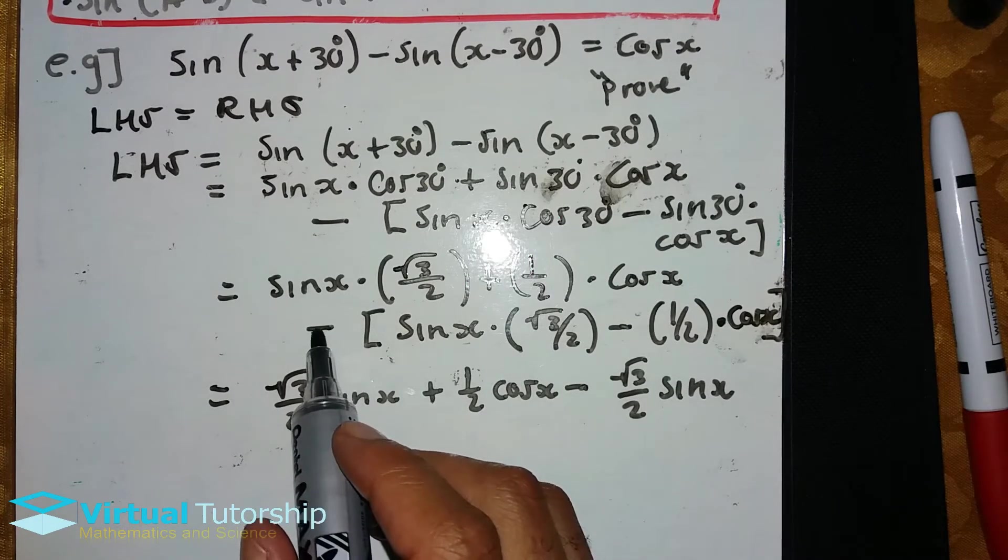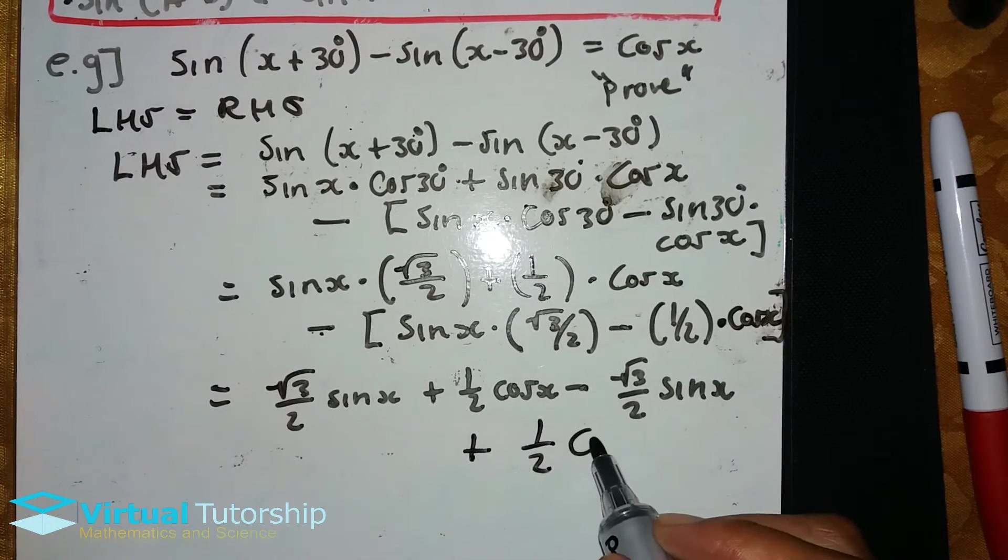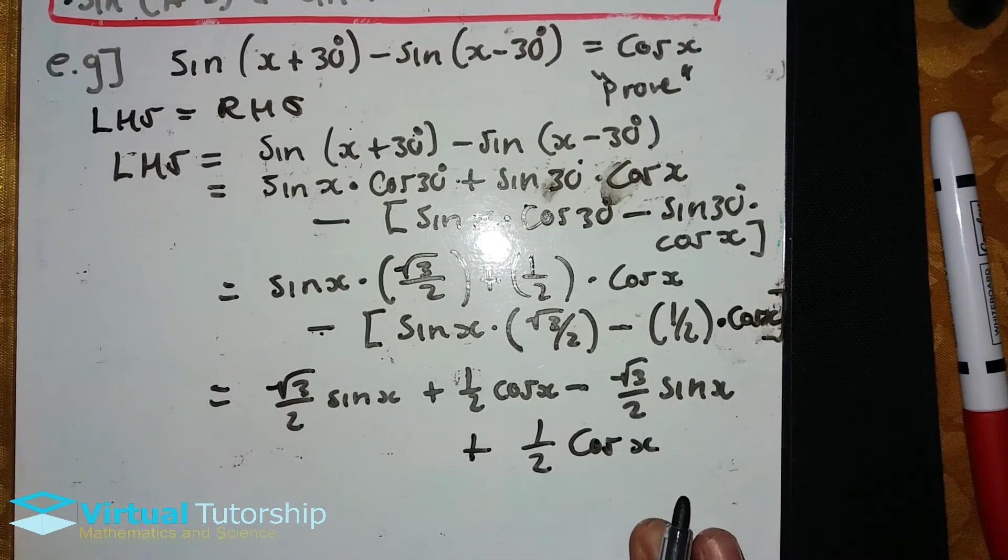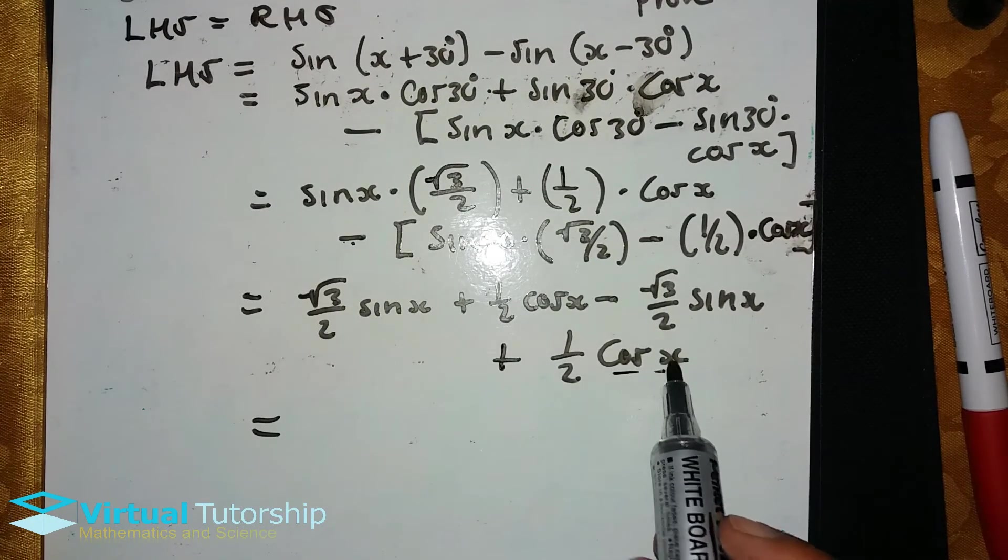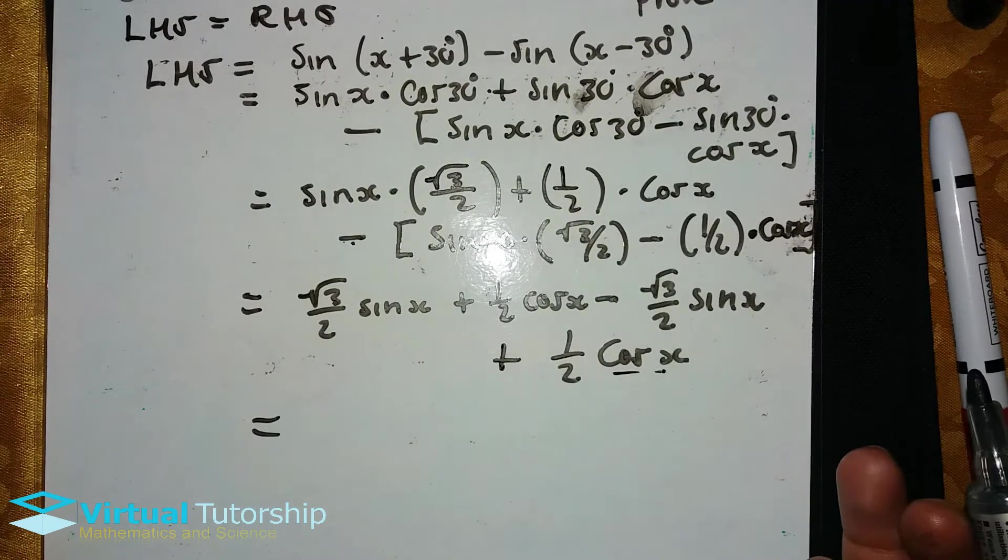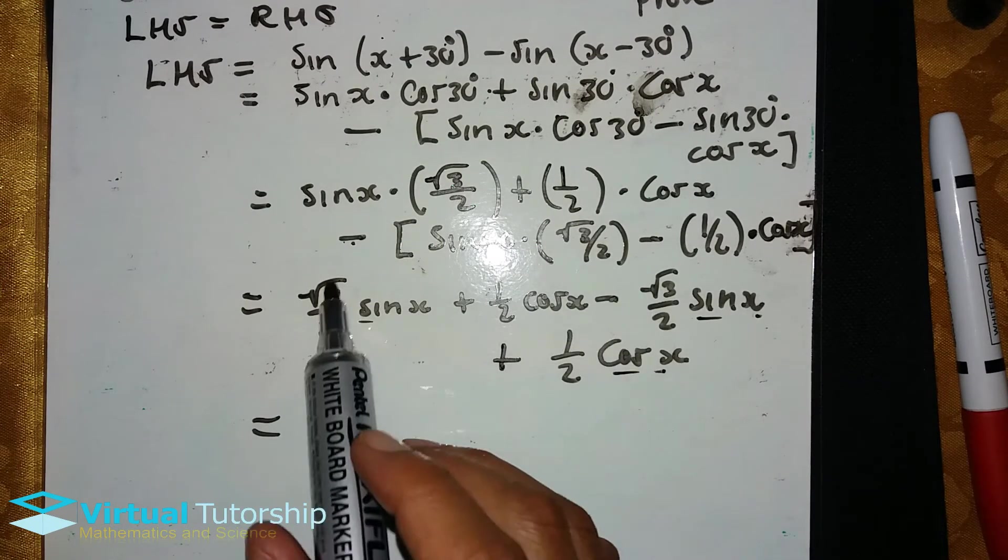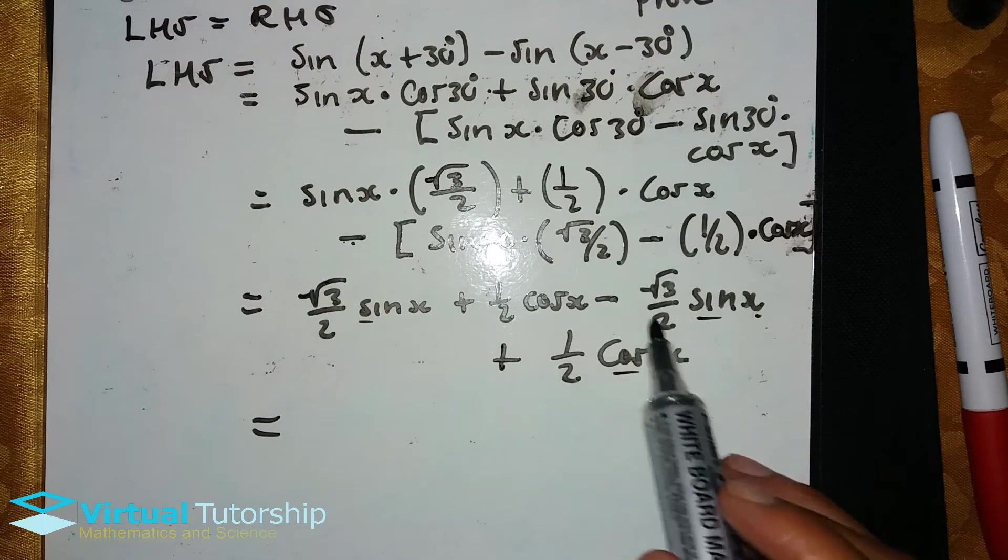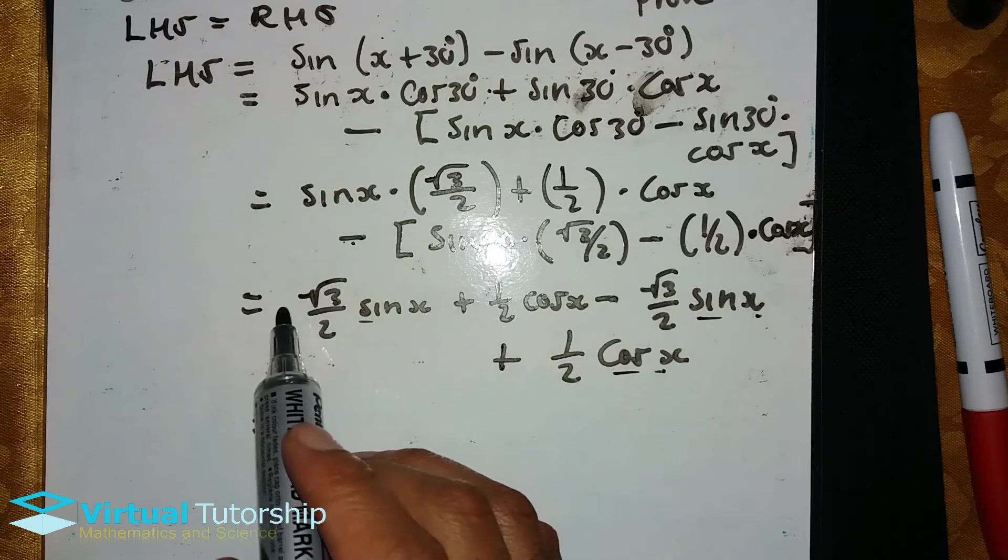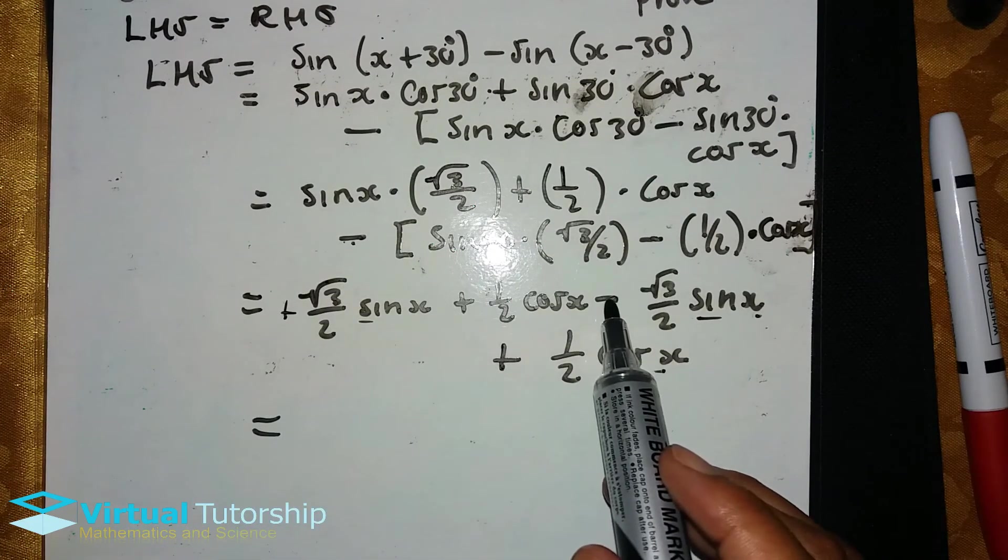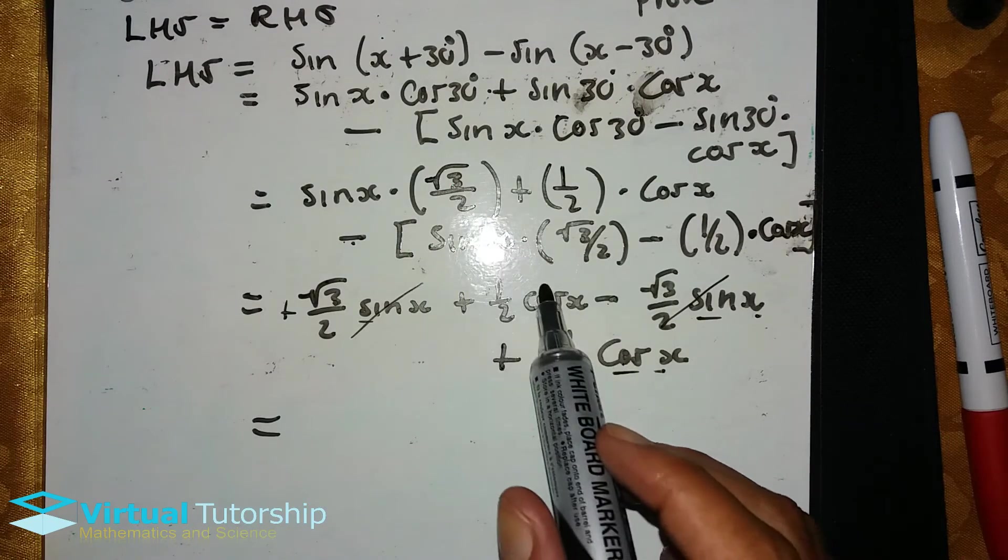Anyway, so this negative and this negative is a positive, so it's plus a half cosine x. This cosine x and this cosine x are like terms. This sine x and this sine x are like terms. But then this term and this term: this one is positive, this one is negative, so they will cancel.